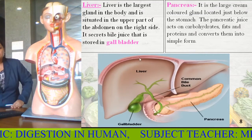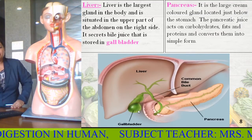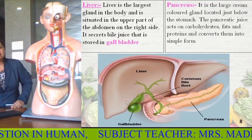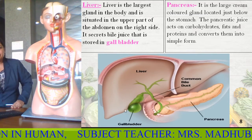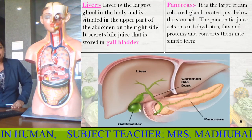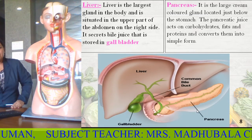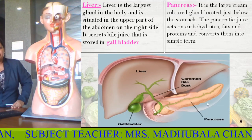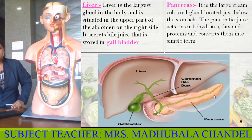In the diagram, this is the liver. It is storing the bile juice here in the gallbladder — that green color, you can see it like a polythene bag. Here it is keeping all these juices. And here you have the pancreas, which is a leaf-like, cream-colored structure.